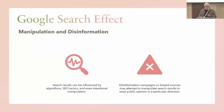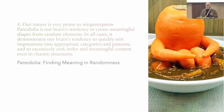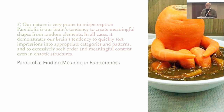The Google search effect is important because search results can be influenced by algorithms, search engine optimization, and even intentional manipulation. Disinformation campaigns or biased sources may attempt to manipulate search results to sway public opinion in a particular direction. Our nature is also very prone to misperception — this is called pareidolia. It is our brain's tendency to create meaningful shapes from random elements, demonstrating how our brain quickly sorts impressions into patterns and excessively seeks order and meaningful content even in chaotic structures.